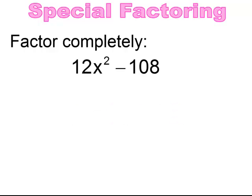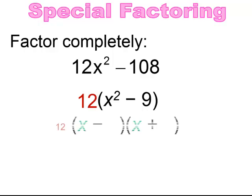Pause and try. First, factor out the GCF — in this case 12. Then you see the difference of two squares and factor it: 12(x − 3)(x + 3), or 12(x + 3)(x − 3).